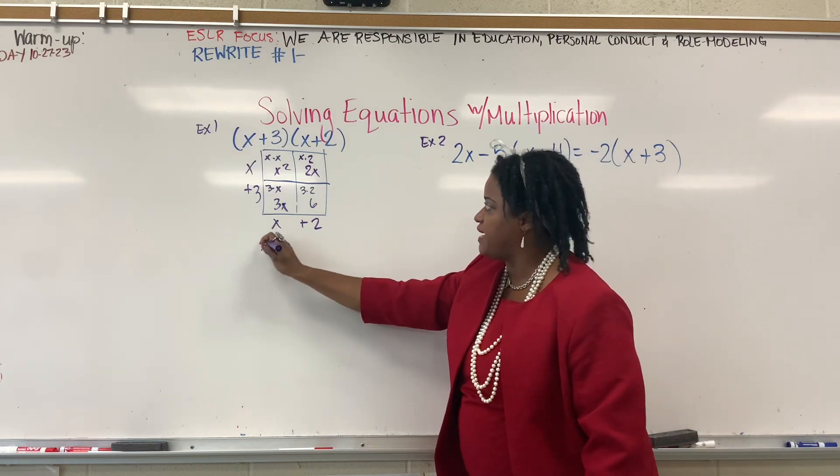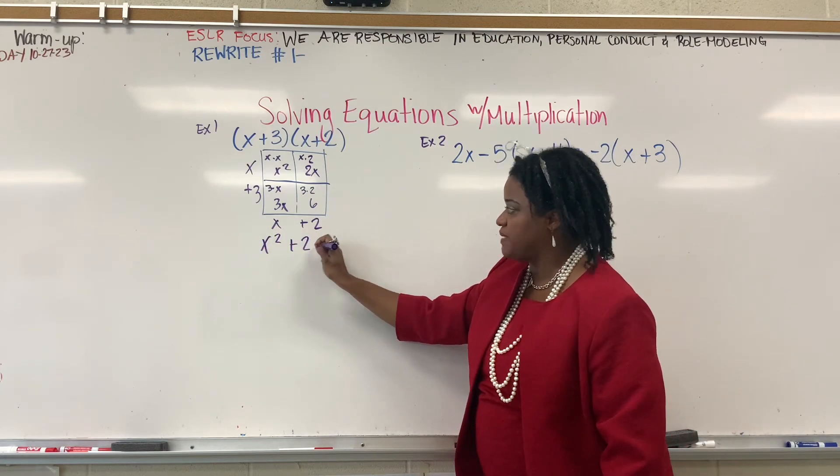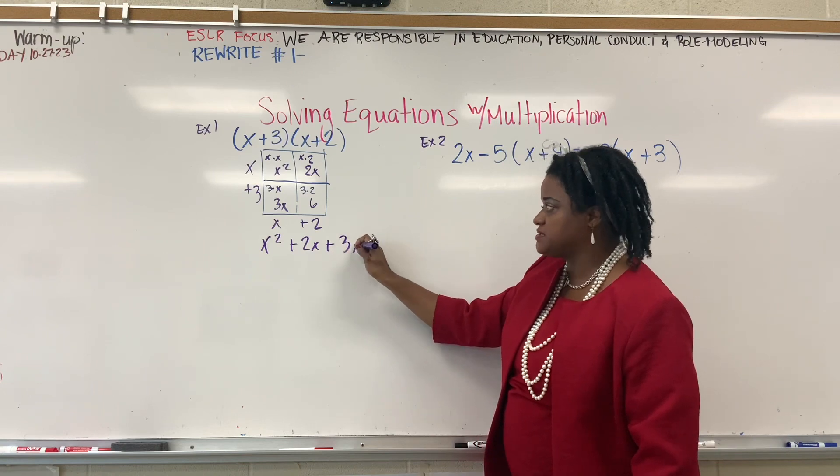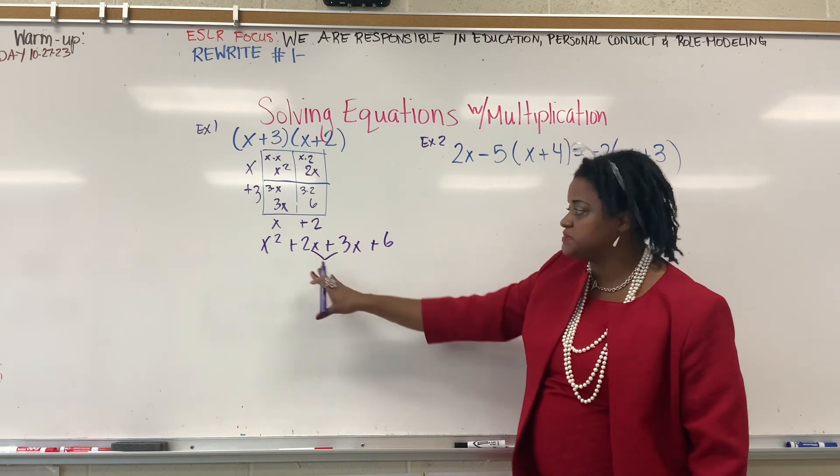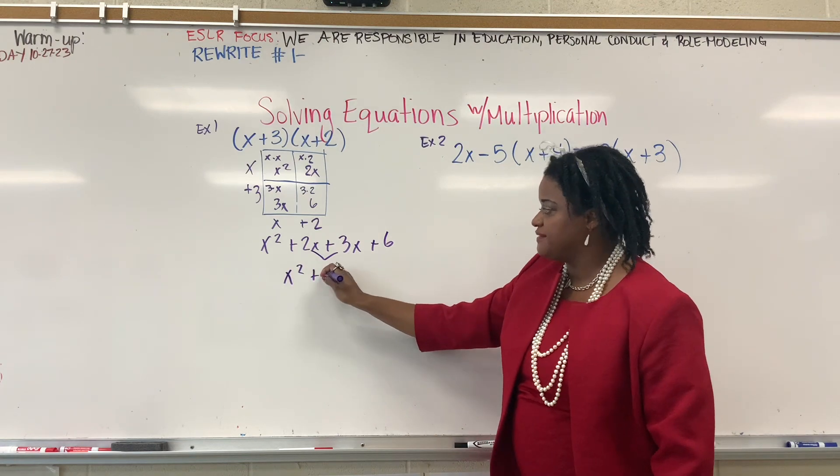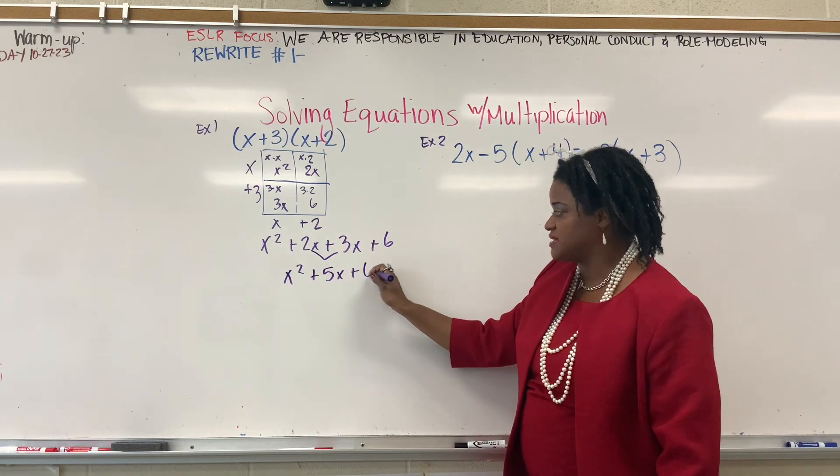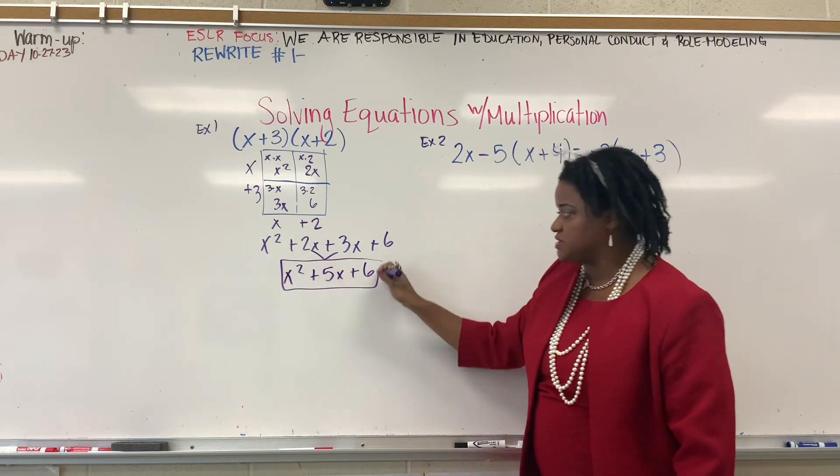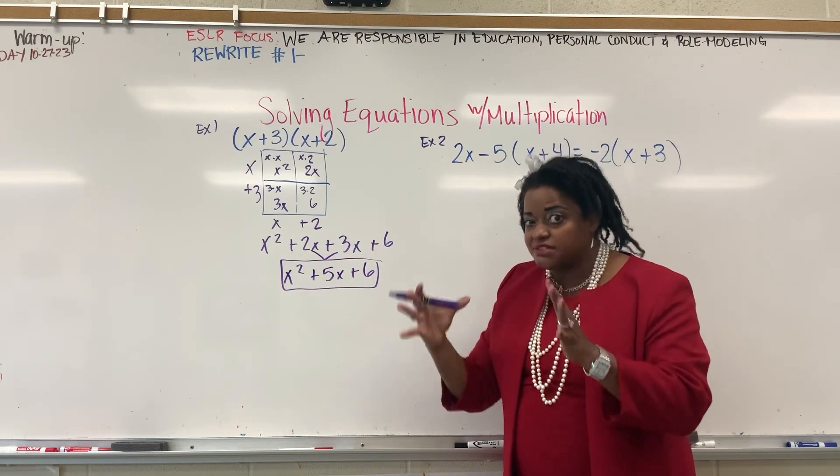Now, we're going to bring that out, and we have x squared plus 2x plus 3x plus 6. Combine like terms, because they both have an x. We have x squared plus 5x plus 6. So that's our answer, and it's a big answer, but that's what we're doing.